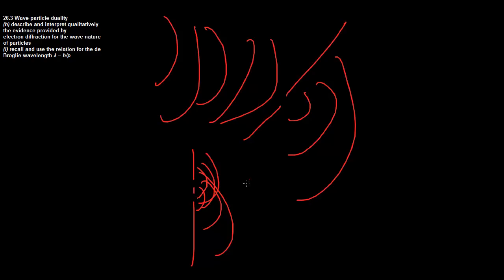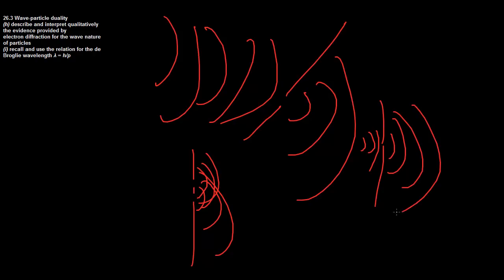It gets even more interesting because we've shown that light is able to do this as well — light can obviously diffract too. That's where the idea that light was a wave came from: that light was a continuous wave of energy because it exhibited these wave-like properties.